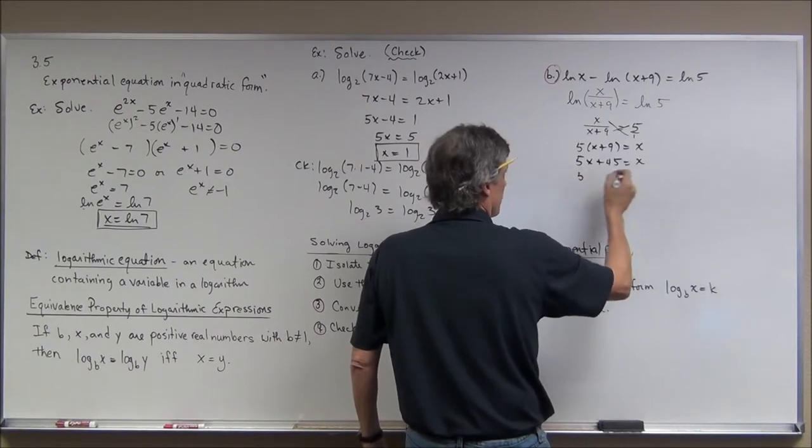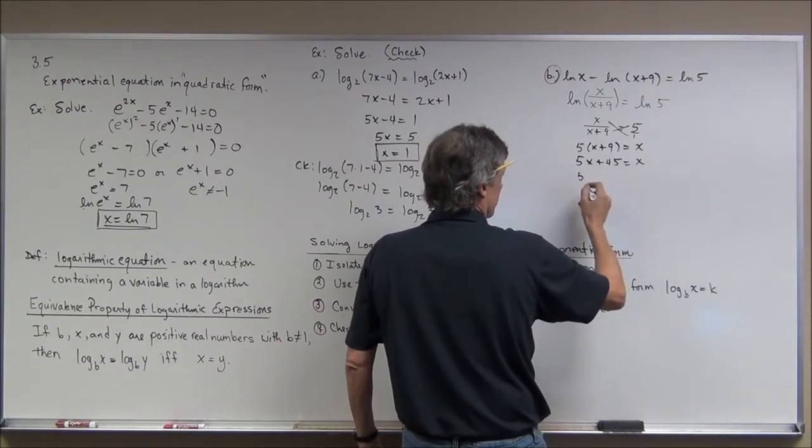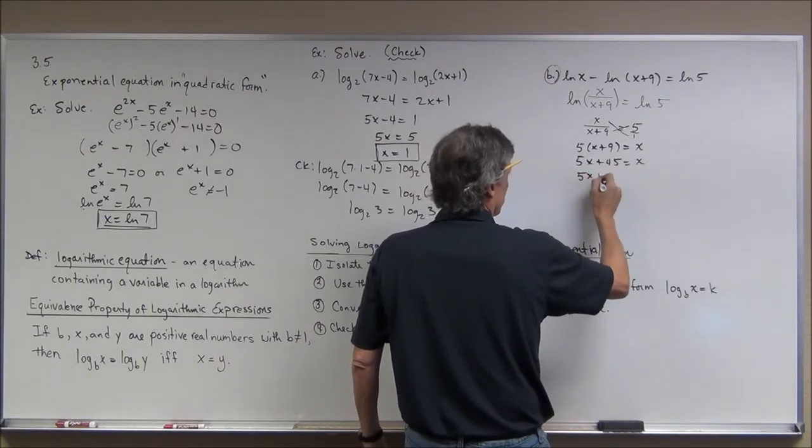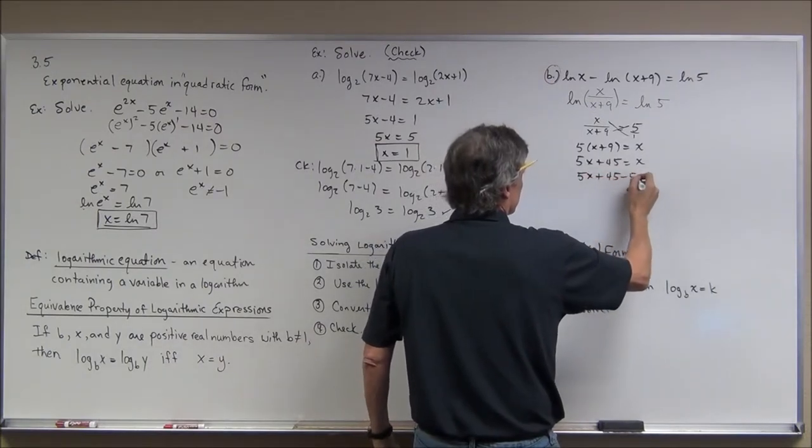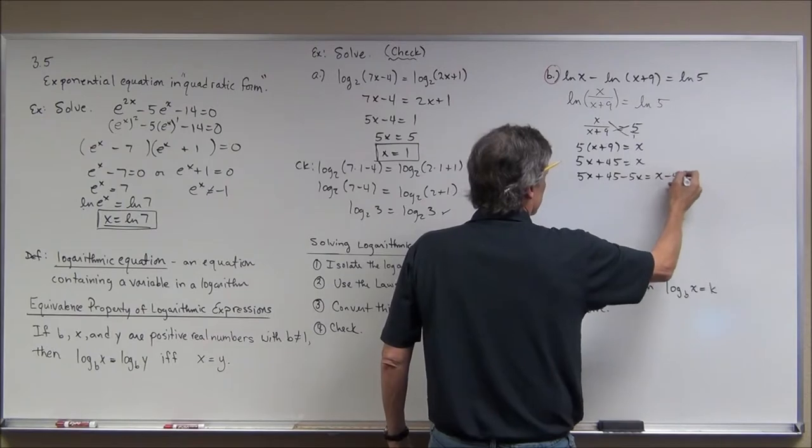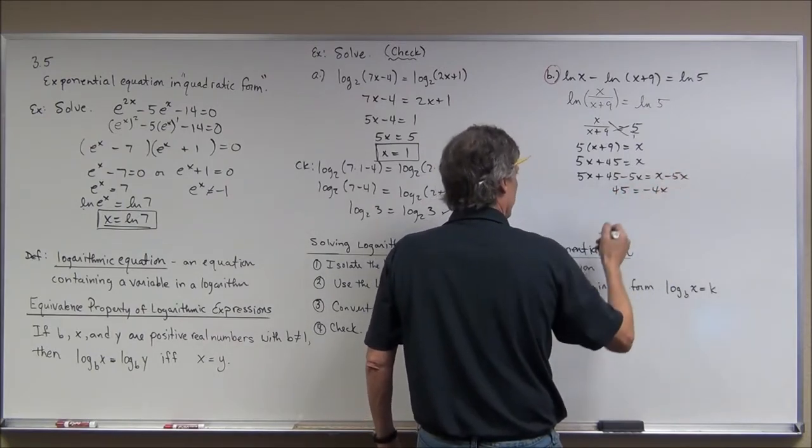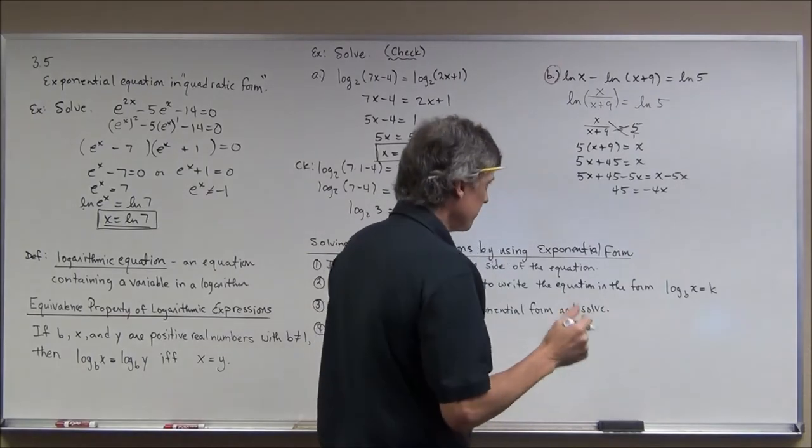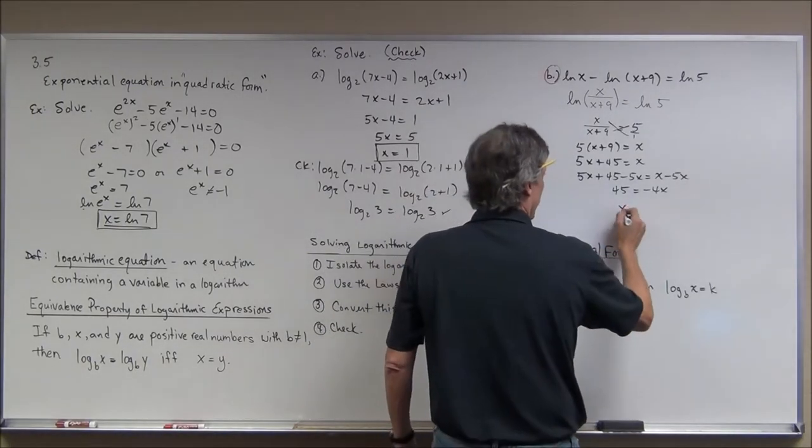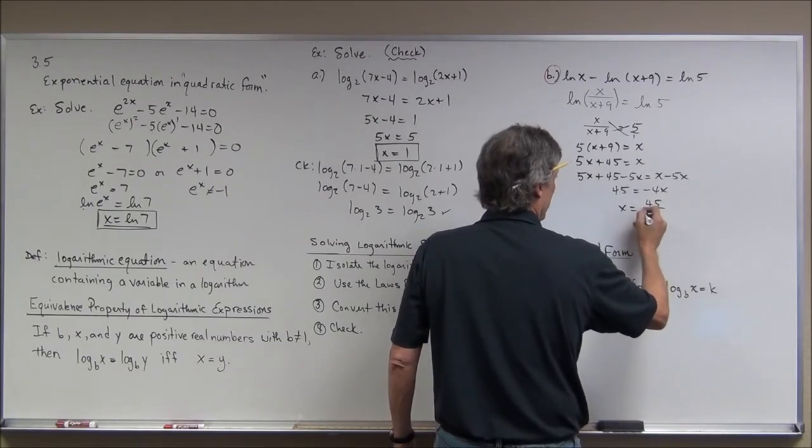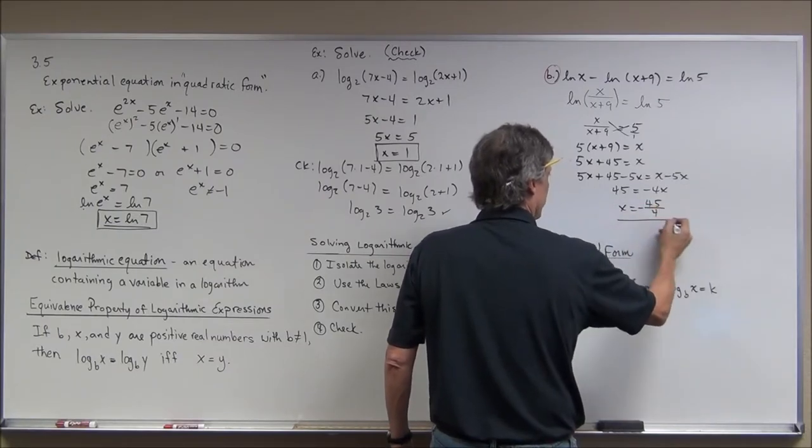I have subtract, well we could subtract 5x from both sides. And I have 45 is equal to negative 4x. And if I divide both sides by negative 4, I have x equals 45 divided by negative 4. I put the negative out in front, I have this expression.